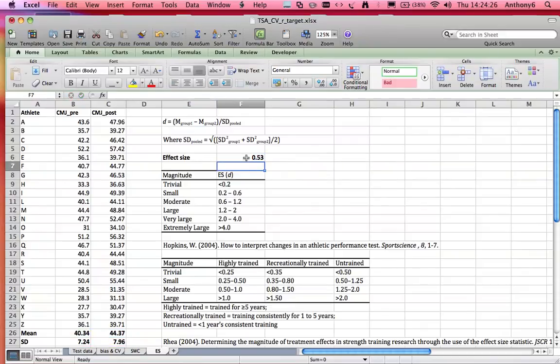So here we have our effect size value which is 0.53, and using the table which is based on the work of Cohen and adapted by Hopkins, we can see that 0.53 relates to a small change in means.